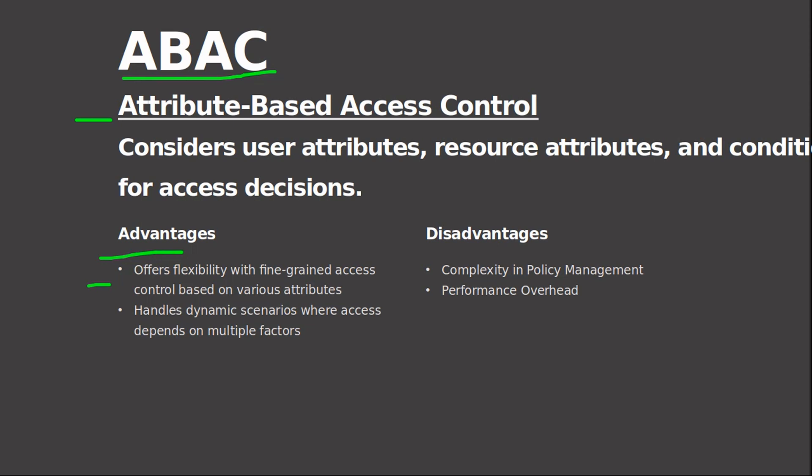By leveraging a wide range of attributes, ABAC enables administrators to tailor access control policies to match the specific requirements of their organization. This flexibility is particularly valuable in complex environments where different users may require varying levels of access based on diverse factors. ABAC supports dynamic policies that adapt to changing conditions, ensuring that access decisions remain relevant and effective in evolving scenarios. Additionally, ABAC facilitates the implementation of RBAC as a subset, allowing administrators to define roles as collections of attributes rather than predefined sets of permissions, enhancing granularity while retaining organizational structure.